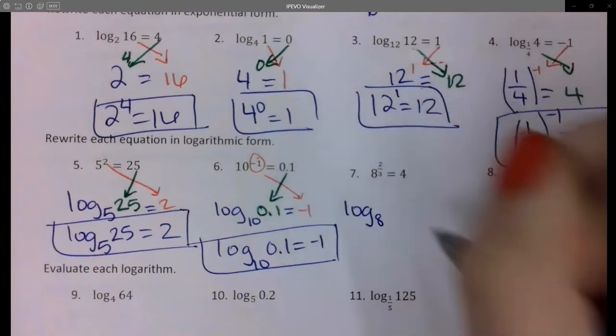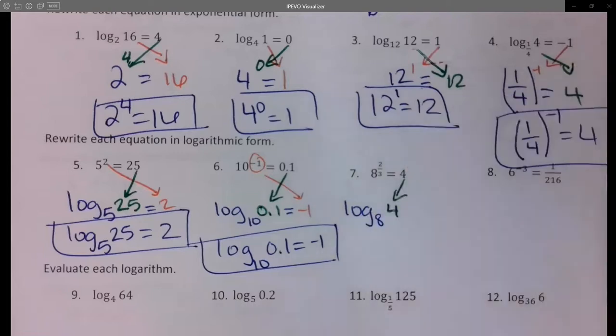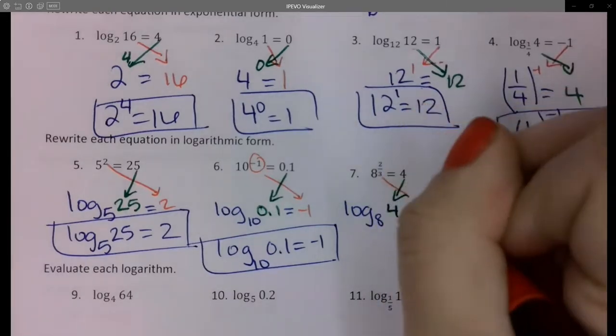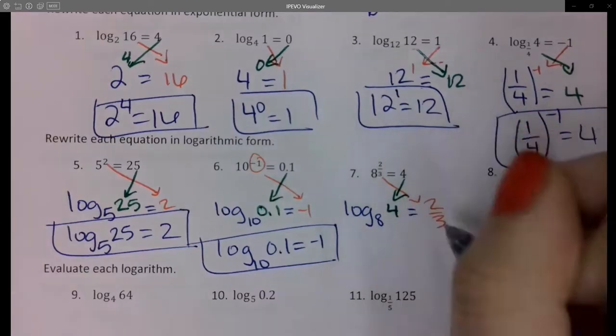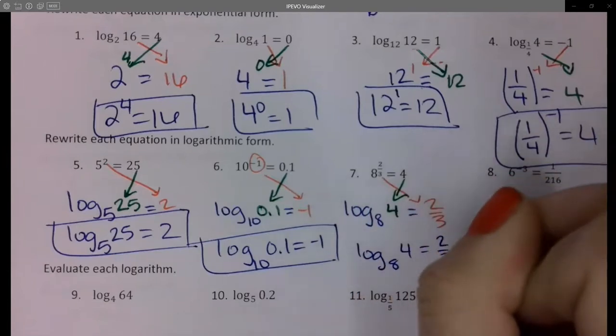Over here on number 7 I have log base 8. The 4 goes down here and the 2/3 go over here. So log base 8 of 4 equals 2/3.